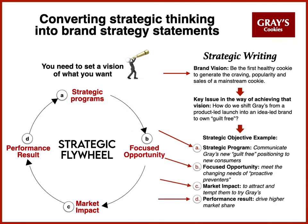Next, I want to layer in the other four elements of the strategy, and this is how I build out my statements. The strategic program: I'm going to communicate my new guilt-free positioning. The opportunity I see is to meet the changing needs of consumers — in this case, a proactive preventer target. The market impact — I want to attract and tempt these consumers to try Graze. And then the performance result is to drive a higher market share. That gives me an overall statement: communicating our guilt-free positioning to meet the changing needs of our proactive preventers, to attract and tempt them to try Graze, so I can drive a higher market share.